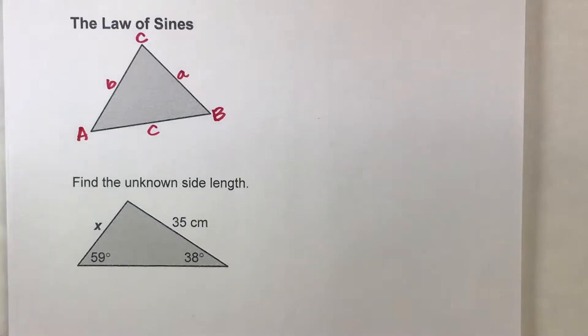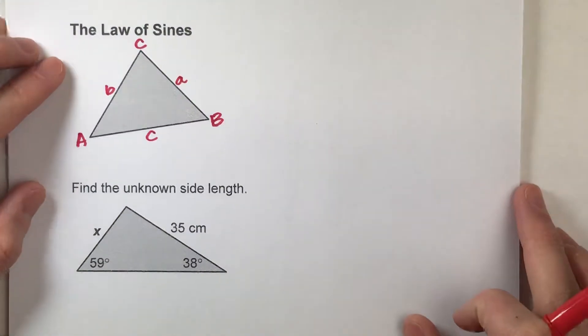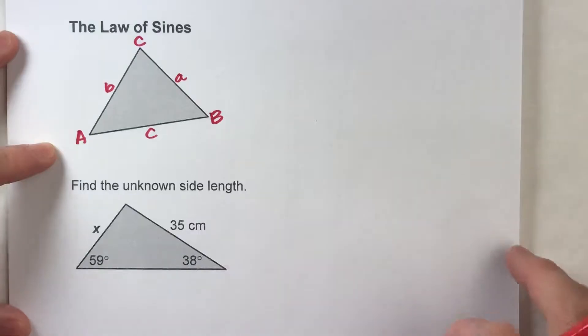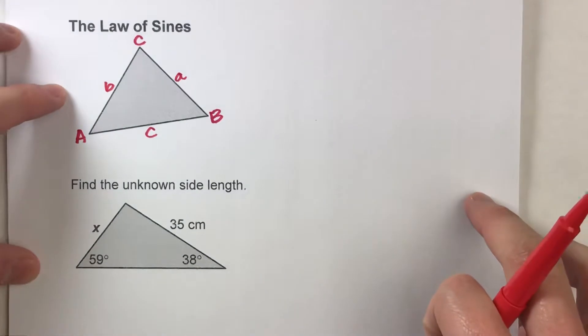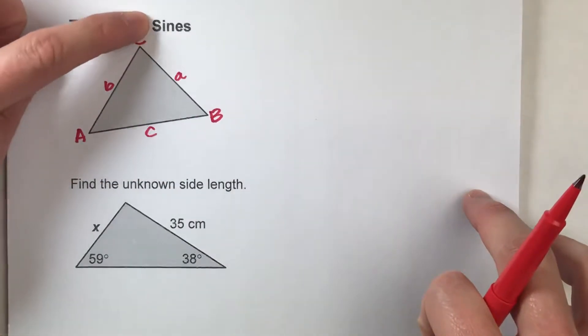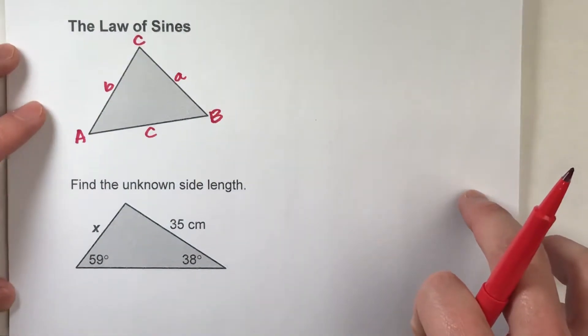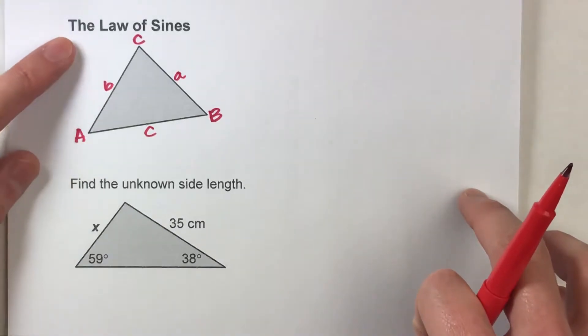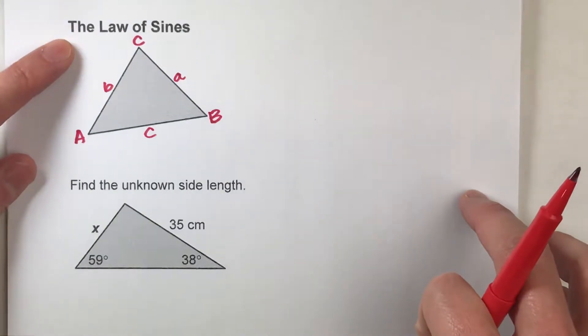Today we are working with the law of sines. The great thing about the law of sines is it works with any kind of triangle, not just right triangles. Because typically when we use trigonometry and just regular sine, we have to have a right triangle so we can use the opposite leg and the hypotenuse. For the law of sines, we can do it with any triangle.